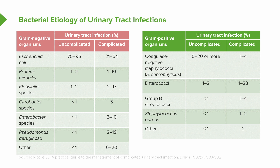Let's review the bacterial etiologies of urinary tract infections. There are two tables: the left lists gram-negative organisms associated with UTIs, and the right lists gram-positive organisms. E. coli is by far the number one cause in uncomplicated UTIs, though it's seen to a lesser extent in complicated UTIs. With complicated UTIs, we tend to see more obscure organisms like Pseudomonas aeruginosa and other Enterobacter species. For gram-positive organisms, the most common are coagulase-negative staph like Staphylococcus saprophyticus, accounting for about 5–20% of uncomplicated UTIs, with less occurrence in complicated UTIs. However, enterococcal infections increase in complicated UTIs.